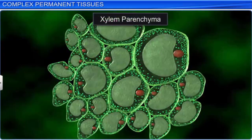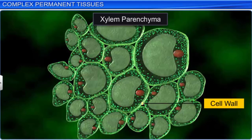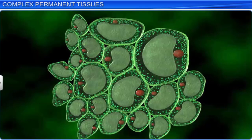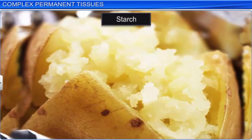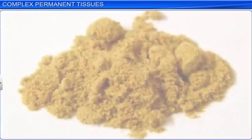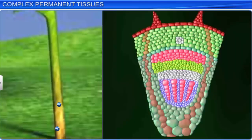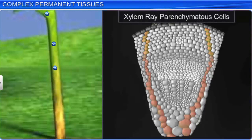Xylem parenchyma is composed of parenchymatous cells. They are living and thin-walled, with cell walls made up of cellulose. These cells store food material as starch, fat, or substances such as tannin. Some xylem cells are arranged in the form of a ray, through which radial conduction of water takes place. These cells are known as xylem ray parenchymatous cells. They are produced from the differentiation of vascular cambium.